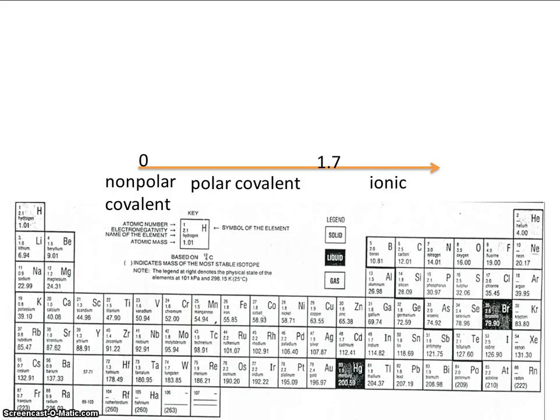In a previous video, we learned how to predict if a bond was nonpolar covalent, polar covalent, or ionic. To do that, we looked up the electronegativity values of the two atoms forming the bond, and then we subtracted them, and we used 0 and 1.7 as benchmarks.